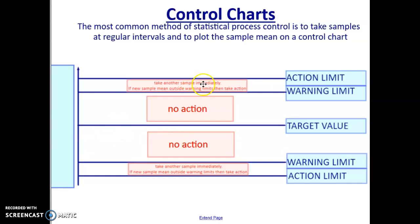If we find that it's above the warning limit at the top or the bottom, then we say something isn't right. It's nothing to worry about, but I need to take another sample straight away. Then if I'm back in the target value, we carry on as normal. But if we get another one outside that warning limit, we need to do something about it. Something's not right that two samples in a row are exceeding that boundary. So if it's between the warning limit and the action limit, we need to take another sample immediately. And if that new sample is outside the warning limits, then we take action.